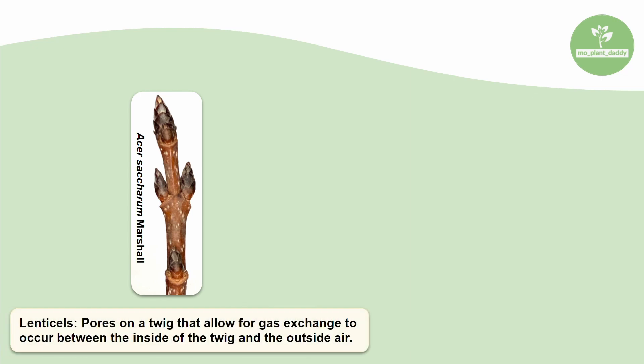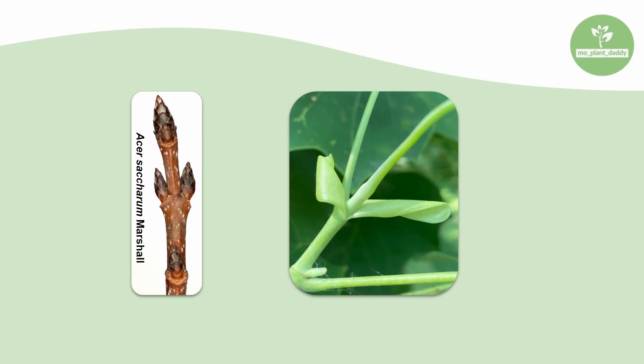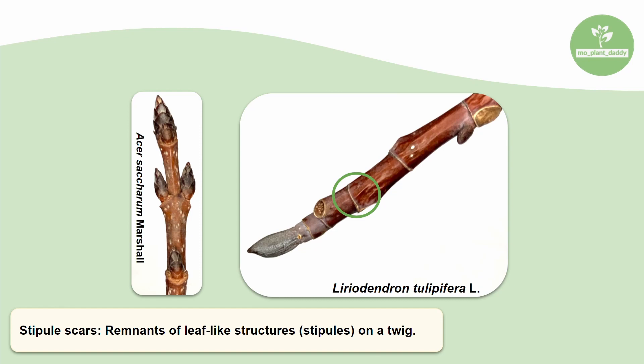There are a few common features that aid with twig identification. Lenticels are pores on a twig that allow for gas exchange to occur between the inside of the twig and the outside air. On this sugar maple twig, the lenticels are the small yellow dots. Some species have more prominent lenticels than others, so this can help out a lot when trying to identify a species. Tulip trees are an example of a species that have a pair of stipules — leaf-like structures that will eventually fall off. When they do, the stipules leave behind a stipule scar; in this case, it is a ring all the way around the twig. These stipule scars, being present or not, can distinguish one species from another.